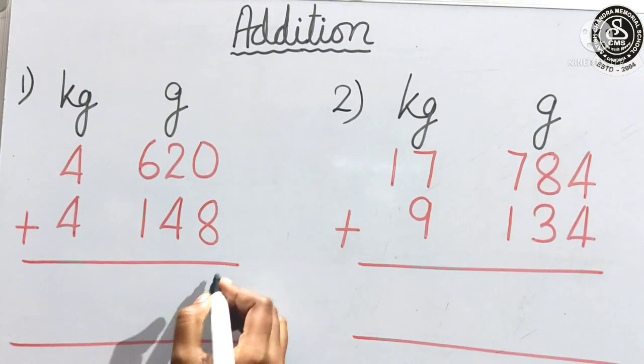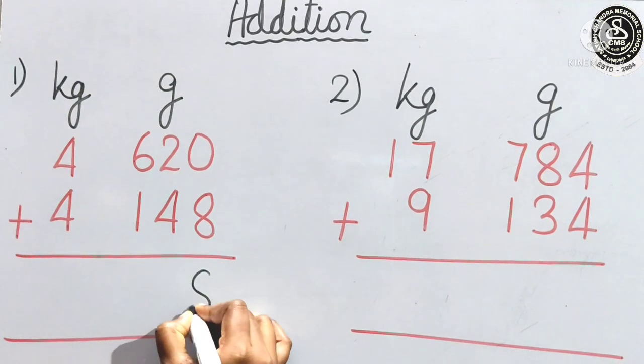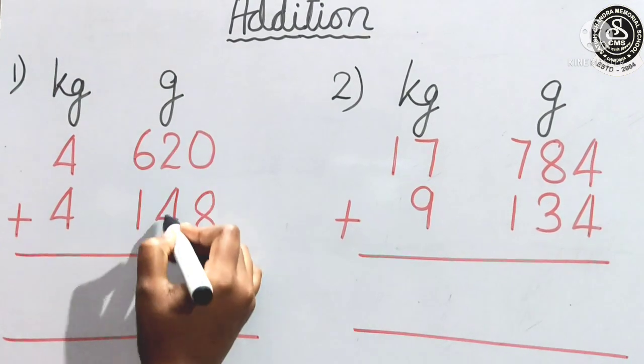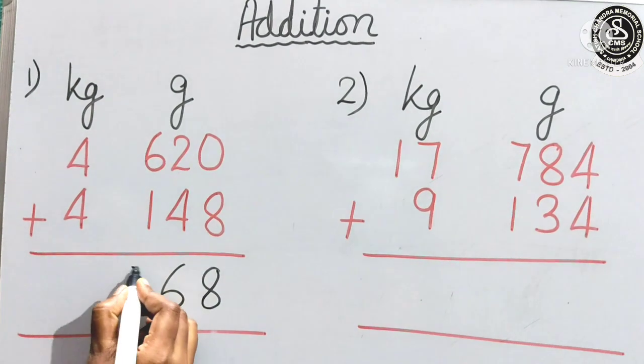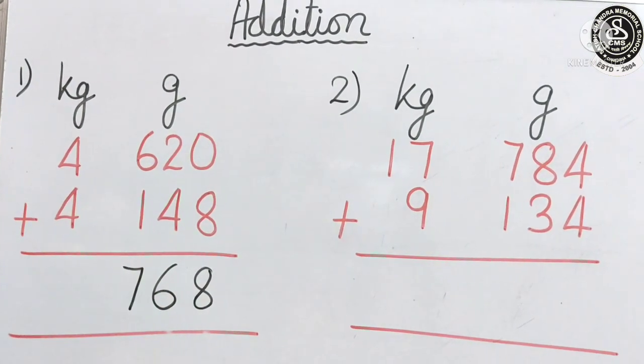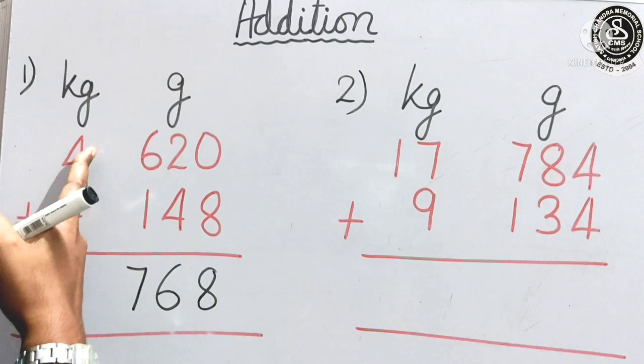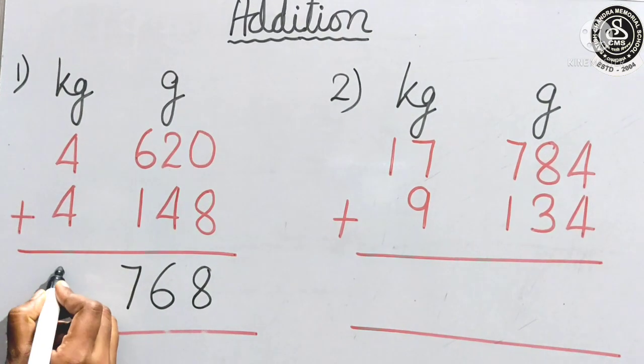So, 0 plus 8 what we get? 8, 2 plus 4, 6, 6 plus 1, 7. Now, come to this side. 4 plus 4, 8.